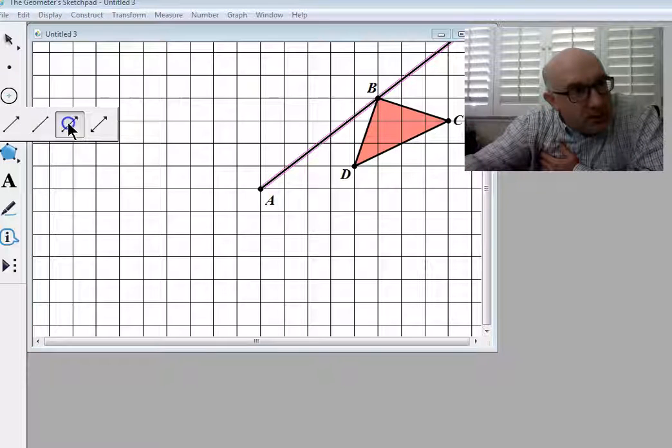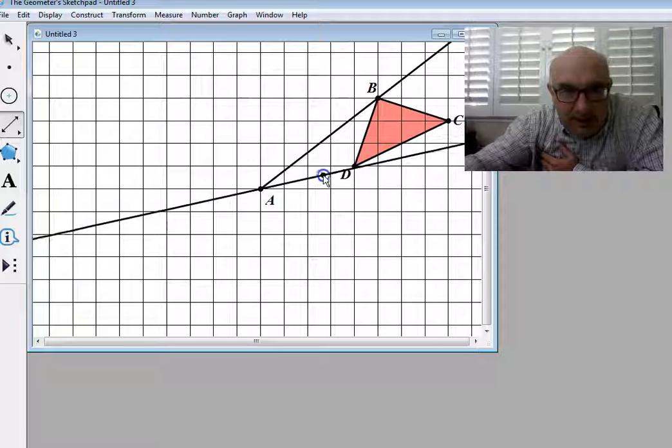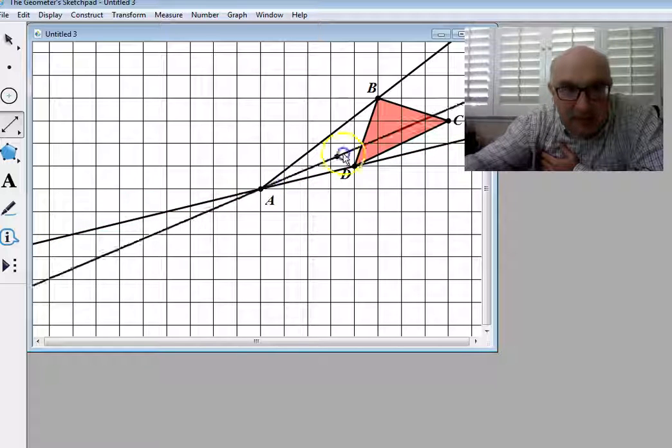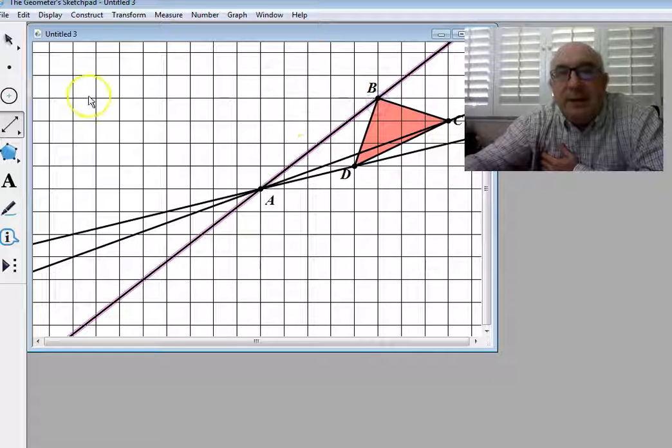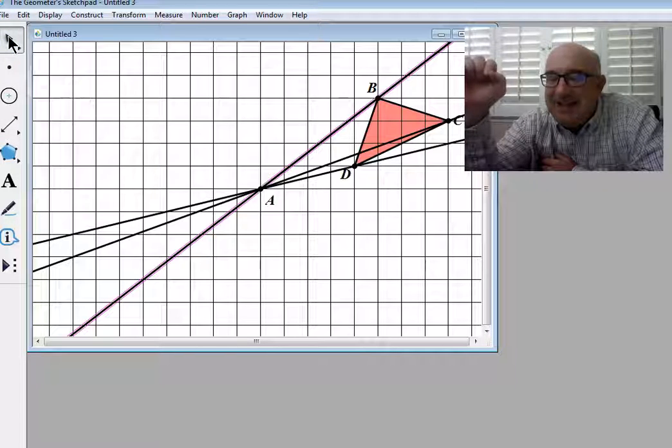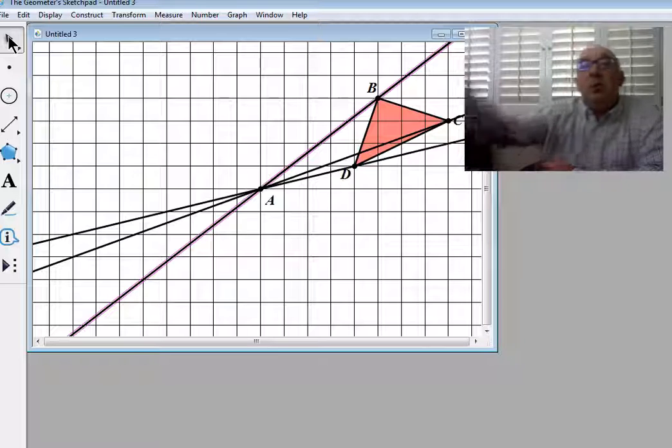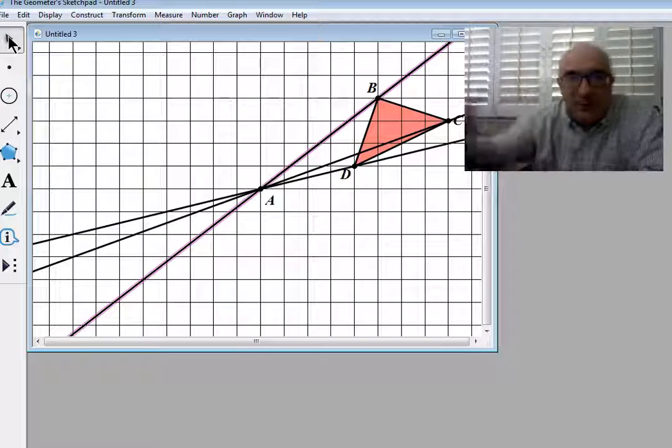So to do that, I'm going to create lines instead of just simply rays, so you'll be able to see this. So the idea is when I dilate my triangle BCD by a negative value, it will go in its opposite direction.